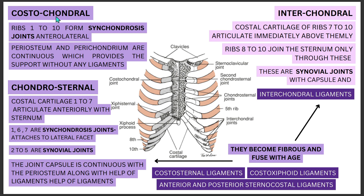The costochondral articulation occurs from rib 1 all the way to rib 10. It is a synchondrosis joint and is present anterolaterally. In this type of articulation, the outer layer of the bone and the outer layer of the cartilage fuse together to provide stability. The periosteum — the outer layer of the rib — and the perichondrium — the outer layer of the cartilage — are continuous, providing support without any need for a ligament.